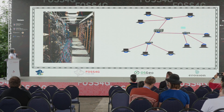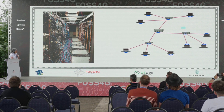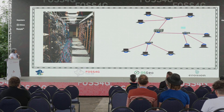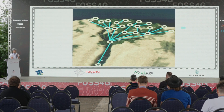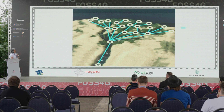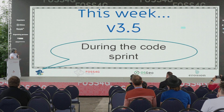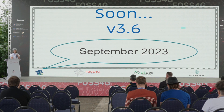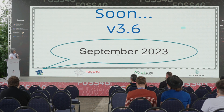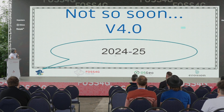PG routing solves graph problems without needing geometry attached. You can represent networks, rivers, or anything with a graph. For example, we have flow functions so you can analyze the flow of water in a river like the Nile. This week during the code sprint we will work on version 3.5.